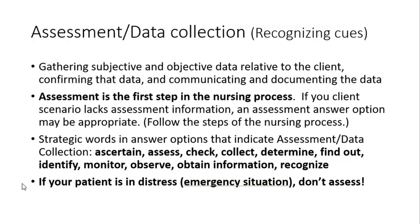Recently in class we had a question where the patient was unconscious — not much description, just unconscious. Students wanted to do intervention-related things because of the 'if in distress, don't assess' rule. But one student pointed out that if that person came in where they work, they'd get vitals and maybe a CT. I said stop — you're saying all sorts of assessment things you still need to do for this patient. You don't have enough information yet to know if they're in distress. It can be tricky, but with practice you'll get it down.